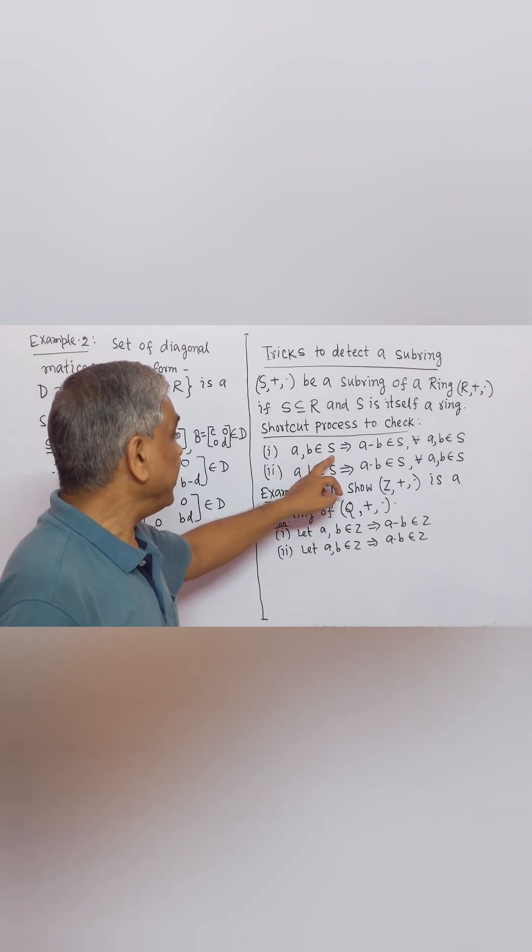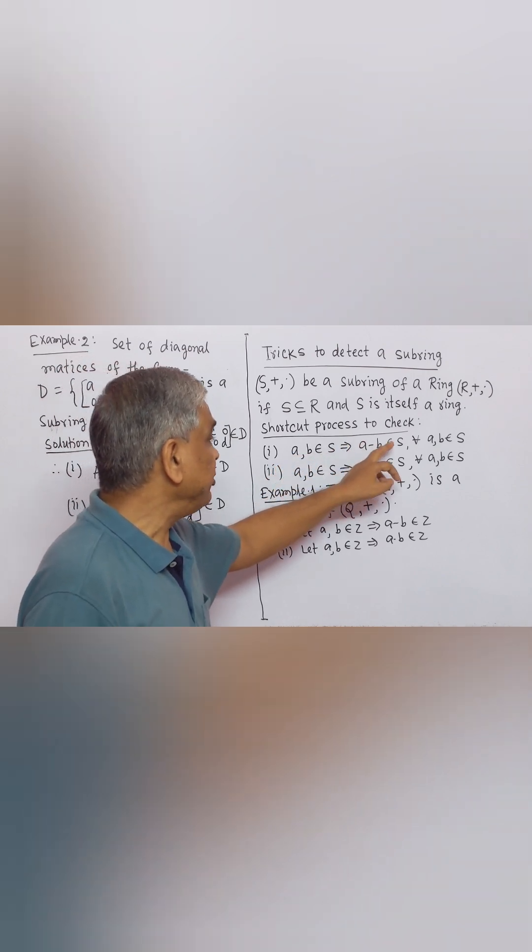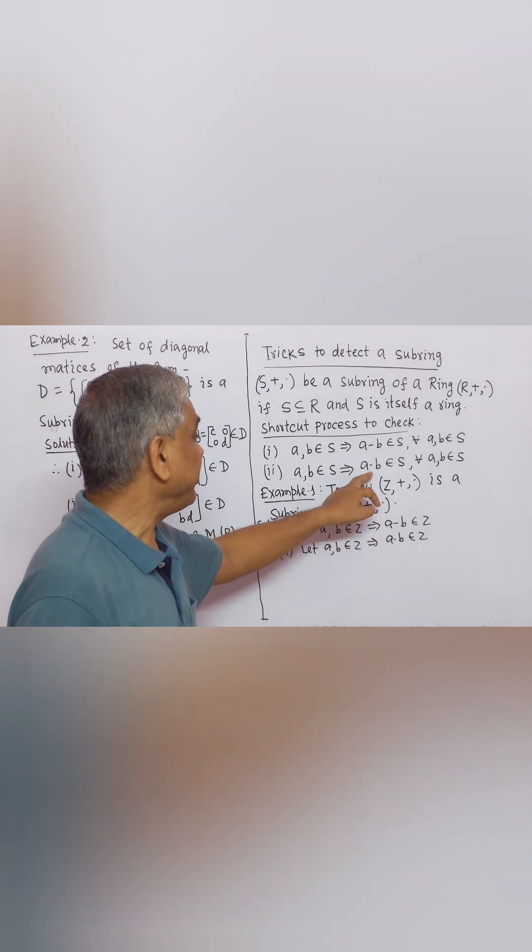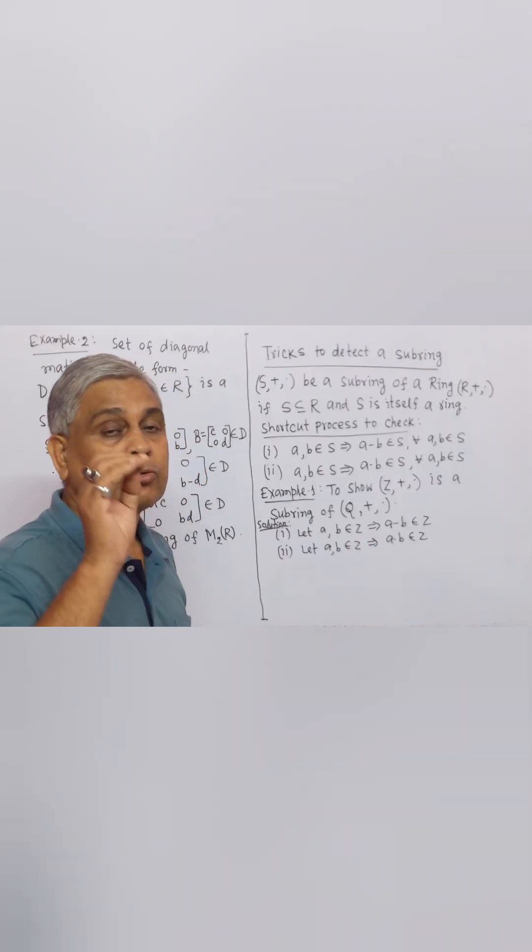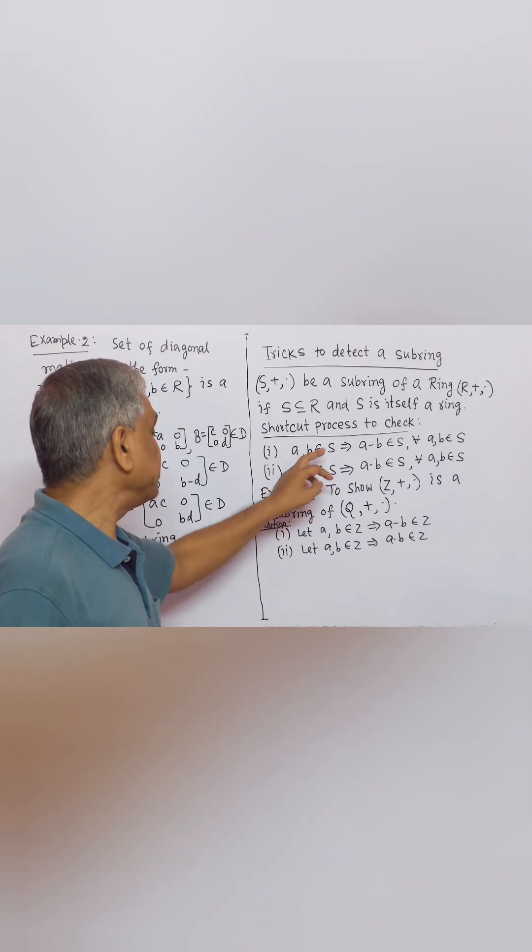Number 1. A, B belong to S implies that A minus B belong to S and A multiply by B belong to S. For all A, B belong to S, then S is a subring.